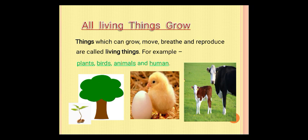For example, plants, birds, animals and human. Woh cheezein joh grow kerti hai, badhti hai; move — hilti dulti hai, matlab ek jage se doosri jage move kerti hai apne aap se; breathe — sans leeti hai; and reproduce — or organisms means or things bhi produce kar sakti hai.